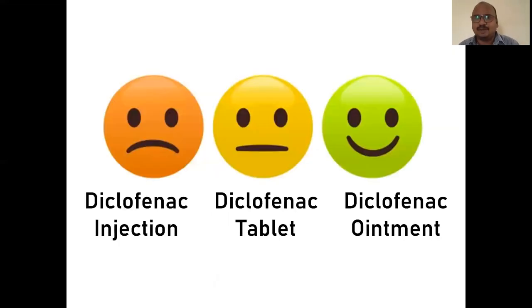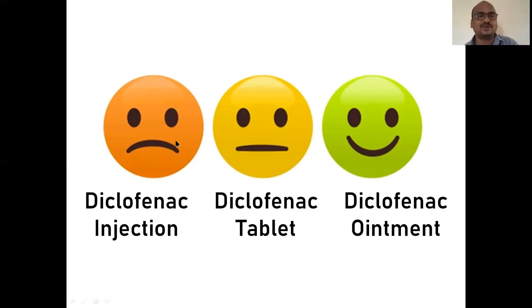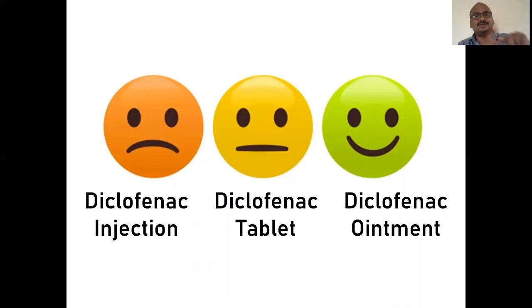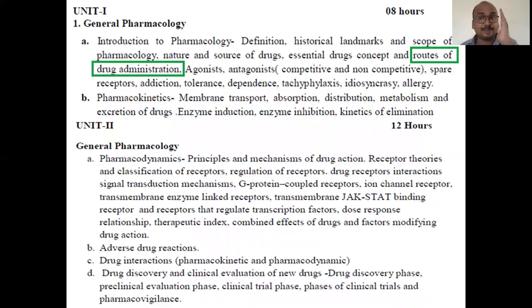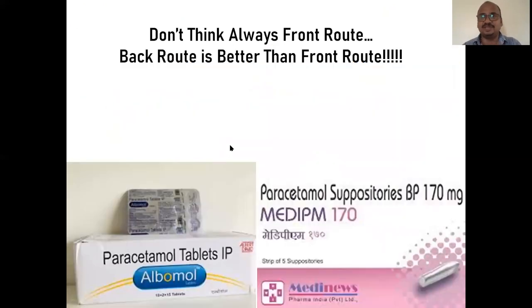Our emotions will change based on the route of drug administration. If the doctor says 'I am giving a diclofenac injection,' your face will drop. If the doctor says 'diclofenac tablets,' it's average. If the doctor says 'I am giving a diclofenac ointment — I will just apply it,' your face will glow. We are studying pharmacology, an important subject for medical and paramedical students, and this is the topic of routes of drug administration.